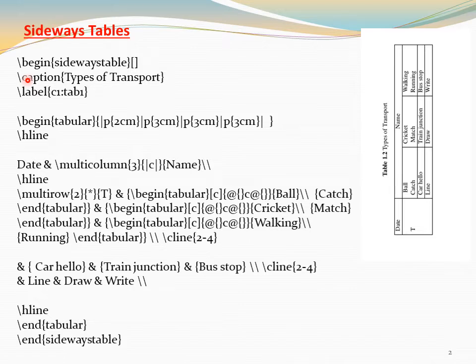Then we are using the caption 'Types of Transport' and labeling it c1tab2. So it is coming under Chapter 1 and Table 2, that is why table 1.2. Now 4 columns are there - we are assigning the width. The first column is 2cm, remaining 3 columns are 3cm.